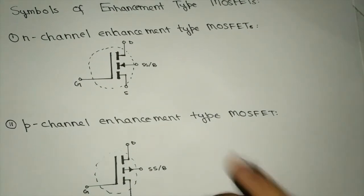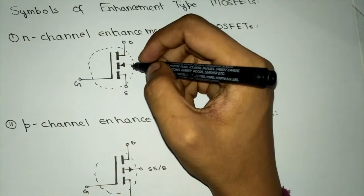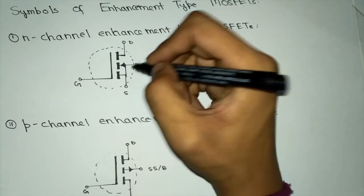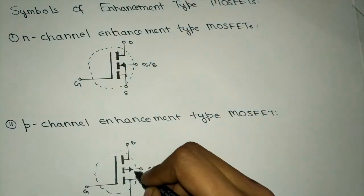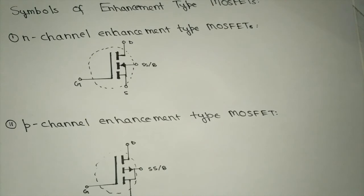Usually the source and the substrate are shorted, so we can represent it in this way.